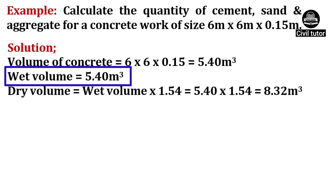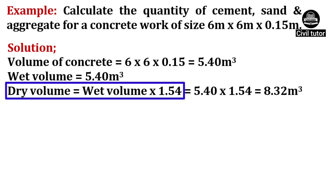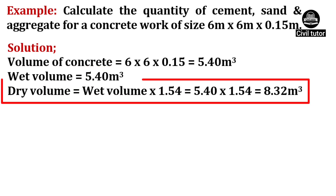We need to convert this wet volume to dry volume to know the exact quantities. Dry volume is given by the formula: wet volume × conversion factor 1.54. Wet volume is already calculated as 5.40m³. So on substituting these values, dry volume will be equal to 8.32m³.